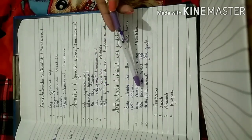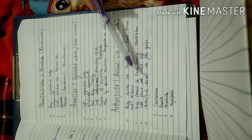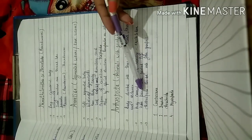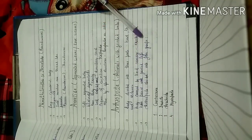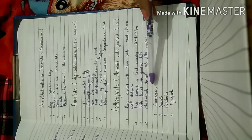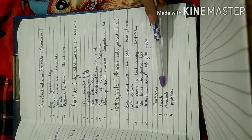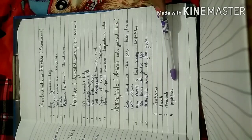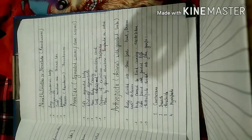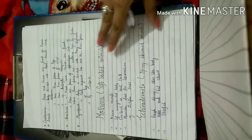These animals have paired and jointed legs. Arthropoda is further divided into four groups and these groups are named as crustaceans, insects, arachnids and myriapods. Now let us study about these groups.